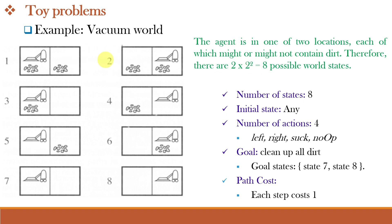Here all the 8 states are shown. In state 1, the agent is in location A which is dirty and B is also dirty. In state 2, the agent is in location B and again both are dirty. And similarly, the other states are shown. And the goal state is state 7 or state 8 where both A and B are clean.